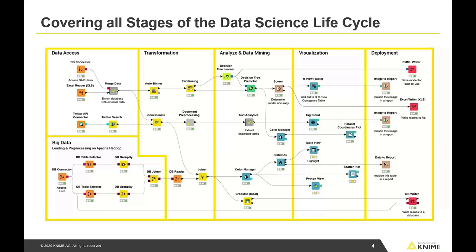KNIME covers all stages of the data science lifecycle — from data access to transformation, with many nodes to massage data into the right format, then built-in machine learning models for classification, clustering, and regression. You can visualize data with different views, deploy to BI tools like Tableau or Power BI, write to databases or Excel files. KNIME also allows you to orchestrate big data platforms — Hadoop, EMR, Google Dataproc, Azure HDInsight — and run Spark processes, all without coding.